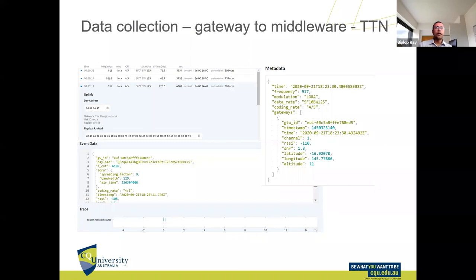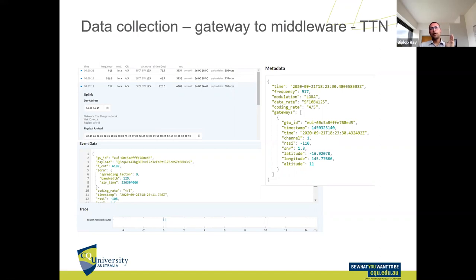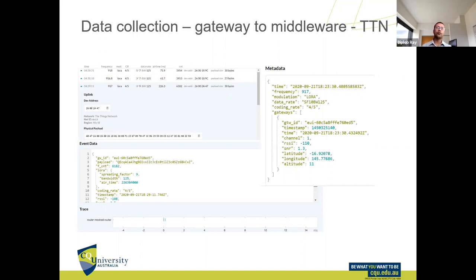This is how data looks in the TTN system. There are two parts: metadata and event data, plus the payload. The payload needs to be decoded because it is a hex signal before being stored in the cloud. Metadata is equally important for knowing the health of the system and ensuring maintenance. There is a lot more research to be done in using this metadata to understand the health of an entire IoT network.